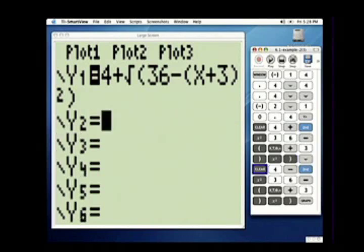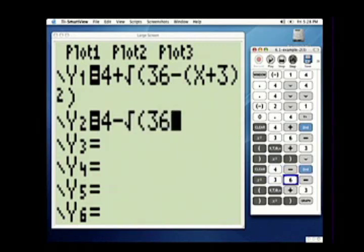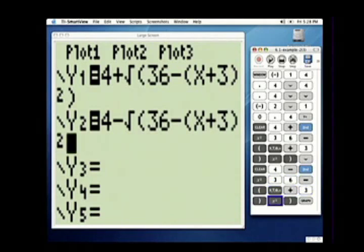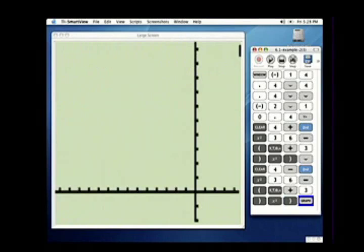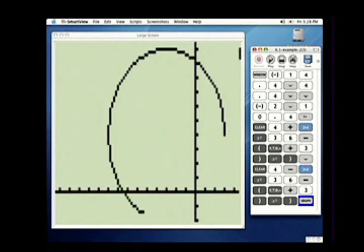But now we have to graph y = 4 - √(36 - (x + 3)²). And then we have to close the parentheses to show that that's all underneath the square root. And when we go to graph it, we get our circle drawn as two semicircles.